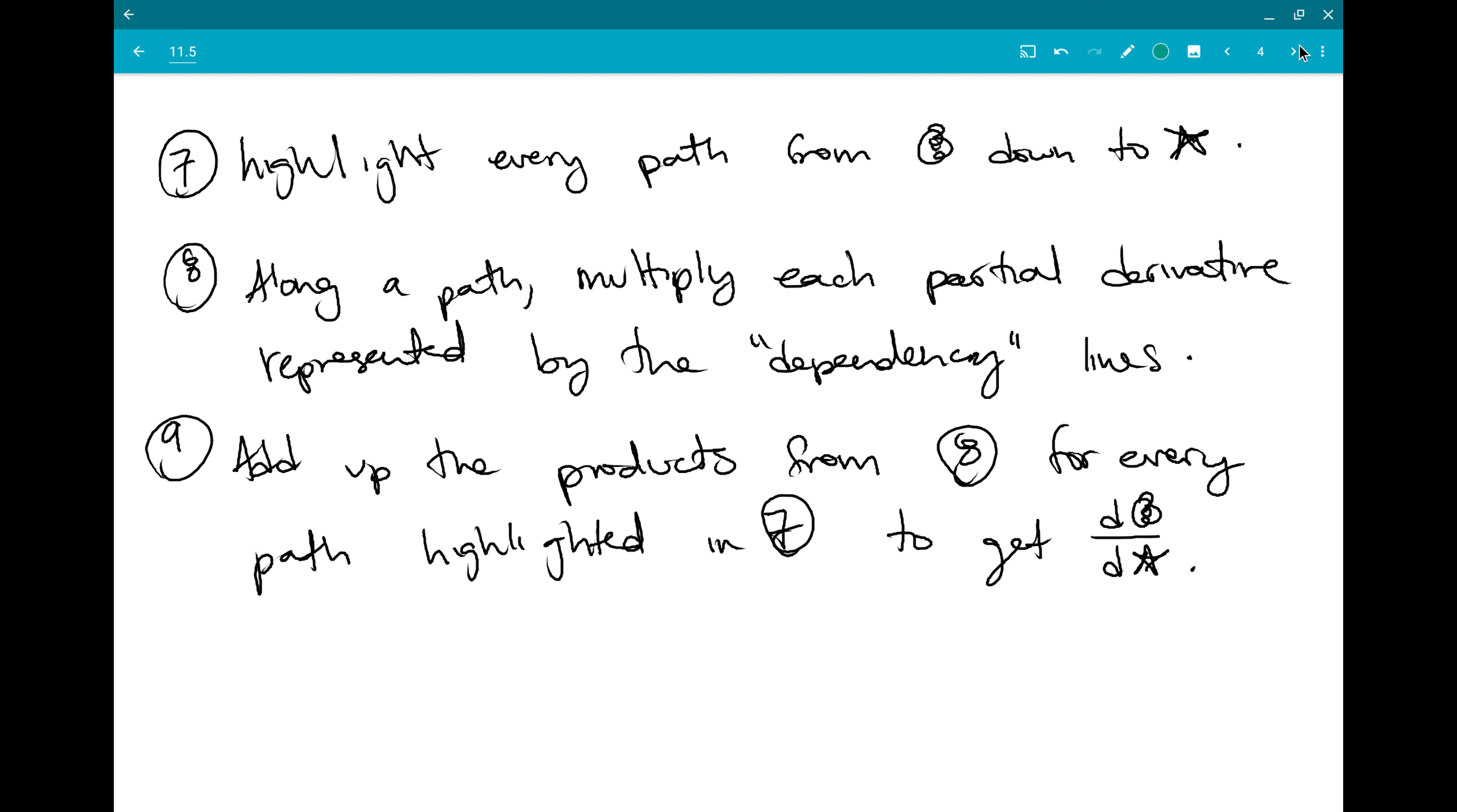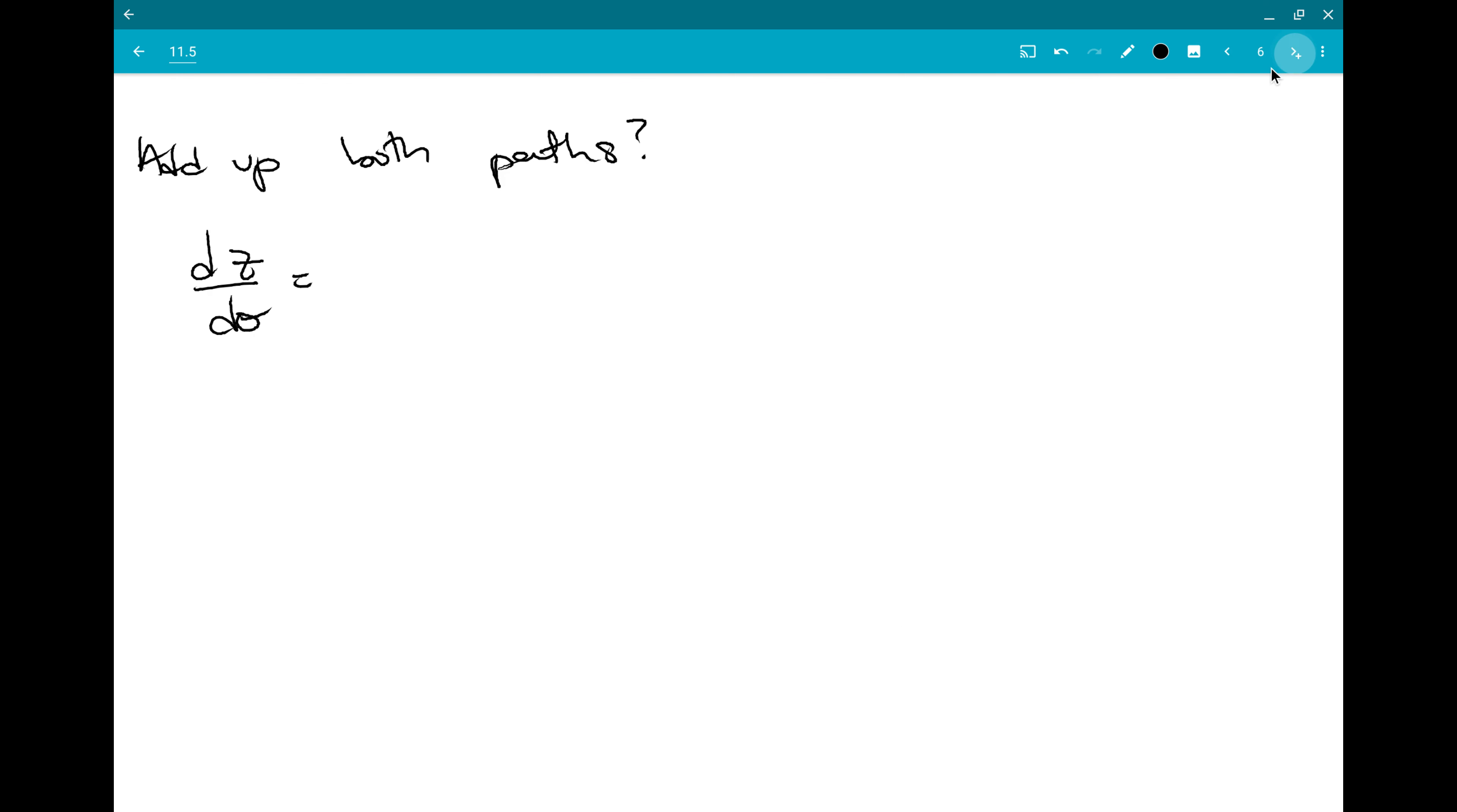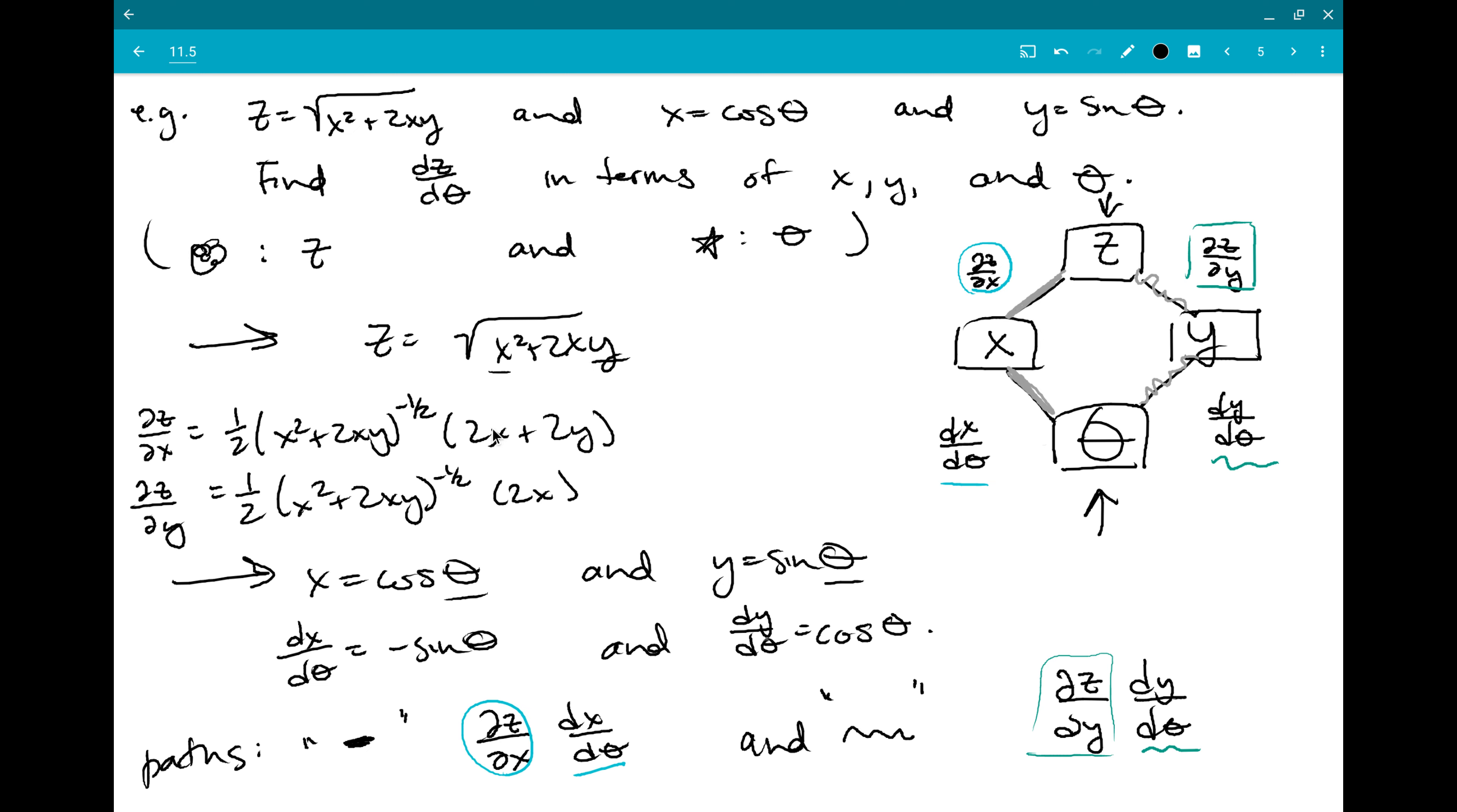And then the last step is that I just add up all the products I just found. And that's going to be my partial, or my chain rule. So I was trying to find dz d theta. And so I know it's going to be this plus this. So I'm going to have the first path, dz dx times dx d theta plus the second path, dz dy times dy d theta.